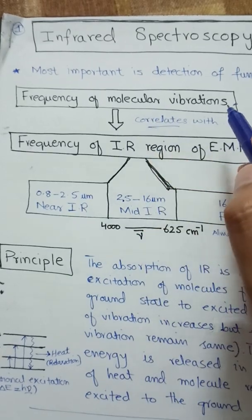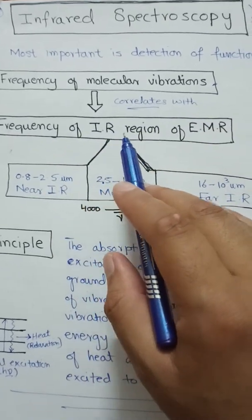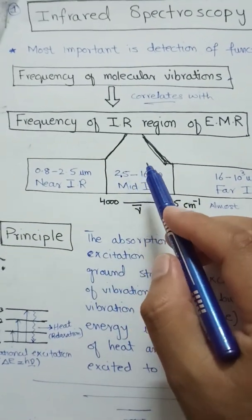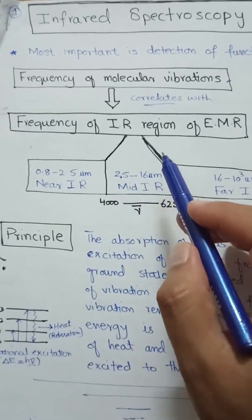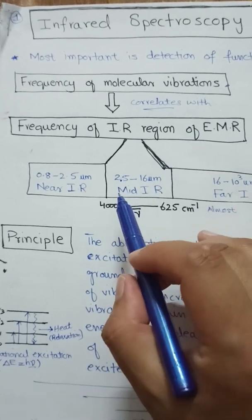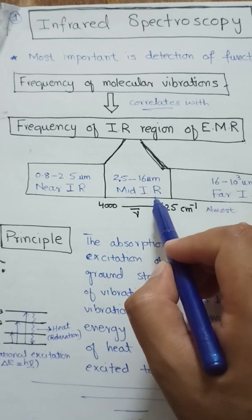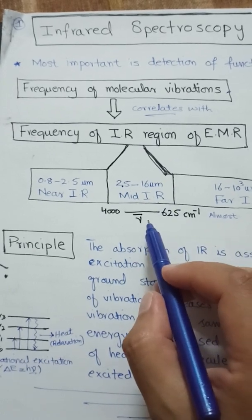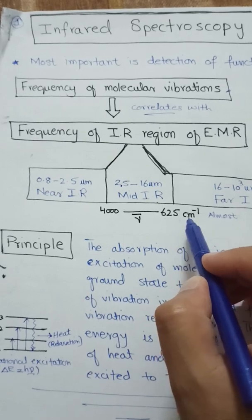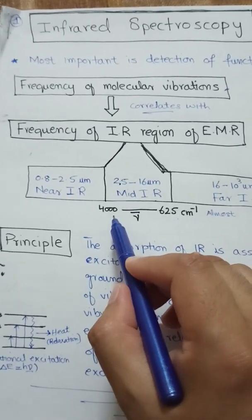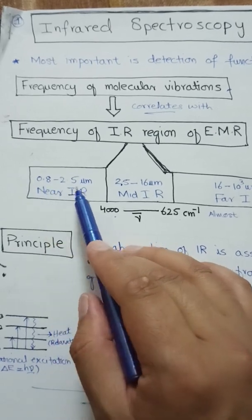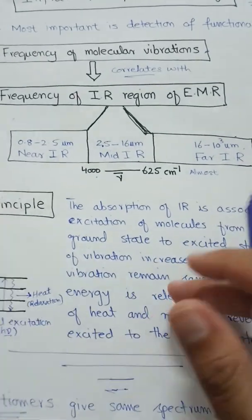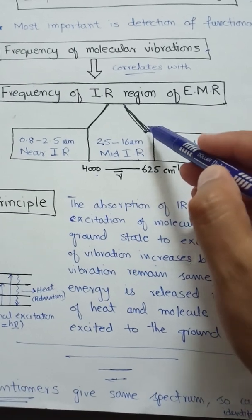In IR spectroscopy, molecular vibrational excitation occurs because the frequency of molecular vibrations matches with the frequency of the IR region of the electromagnetic radiation. The most important region is the mid-IR region, which is from 2.5 to 16 micrometers, corresponding to wavenumbers from 625 per centimeter to 4000 per centimeter. The near infrared is 0.8 to 2.5 micrometers and far infrared is 16 to 10³ micrometers, but the mid-infrared region is most important for vibrational excitation.